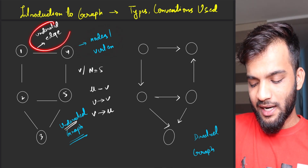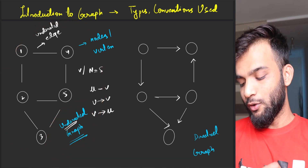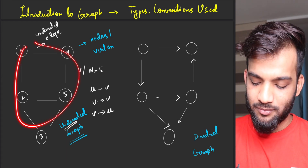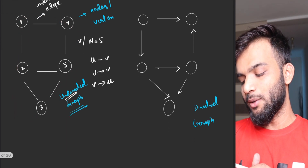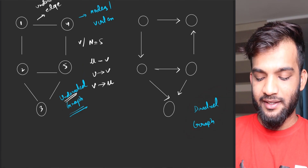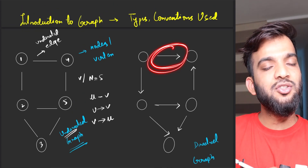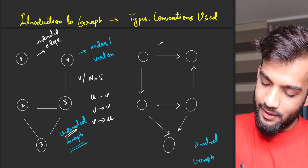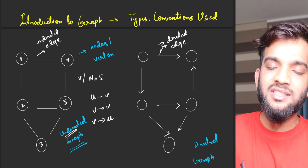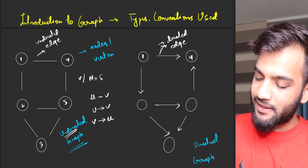So as of now we just need to know the terminologies: node, vertex, undirected edge, and undirected graph. Now it's not compulsory that a graph has to be a circle-like structure. Now the only difference in a directed graph is the directed edge — remember this — this thing will be a directed edge, rest everything stays the same.